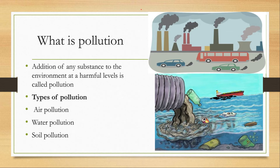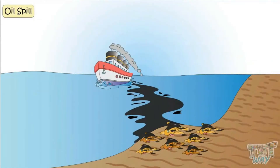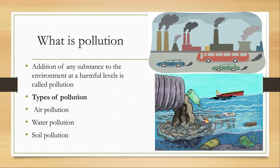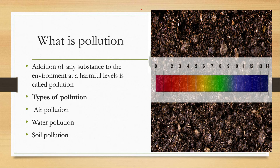Another main type of pollution is water pollution. Water pollution is the contamination of water bodies that causes loss of aquatic life and causes many diseases in humans. Water pollution also adversely affects soil pH, decreasing the availability of nutrients to plants.